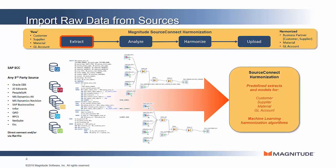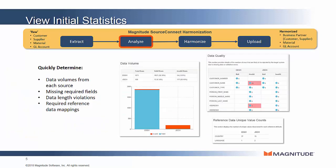The first step is to gather the raw data from the various sources. SourceConnect Harmonization includes pre-built extraction mappings for SAP ECC, several major ERP systems from non-SAP vendors, as well as a universal API to load data from any system. Once the raw data is captured, it is loaded into the predefined model. The engine will then perform some basic data quality checks and inform the user of the volumes loaded from each source, how many of those records would violate rules when loading into Central Finance — for example, missing required fields or data length violations.